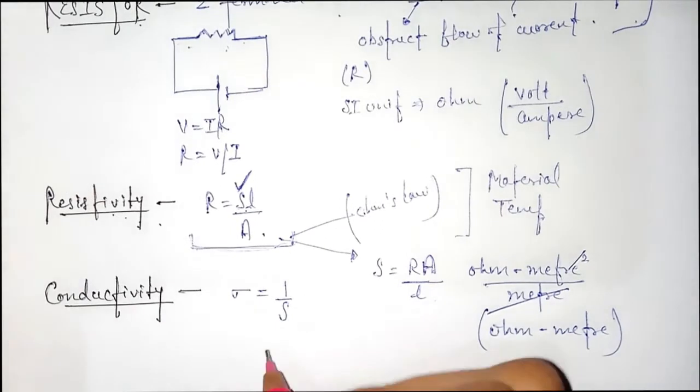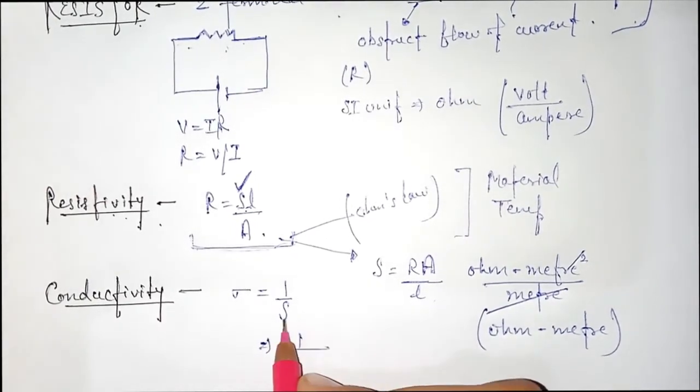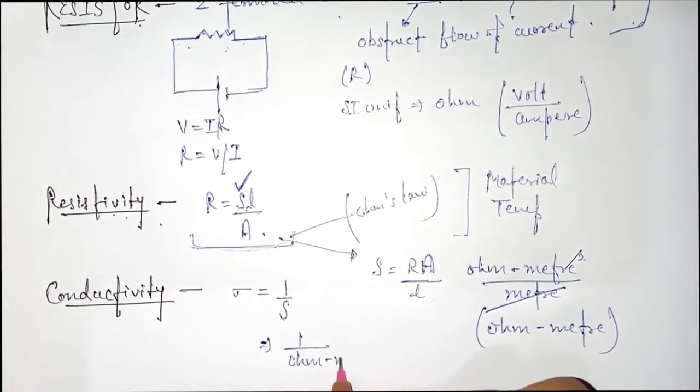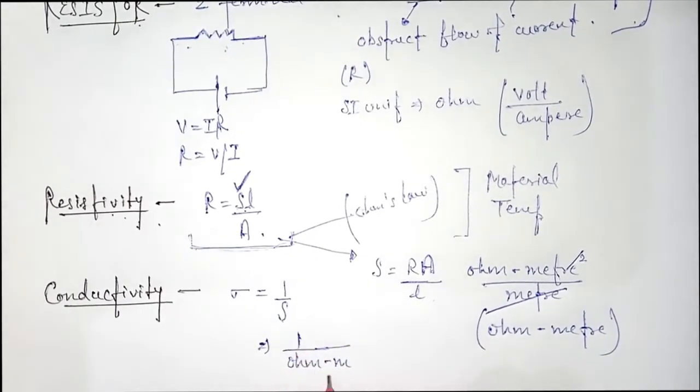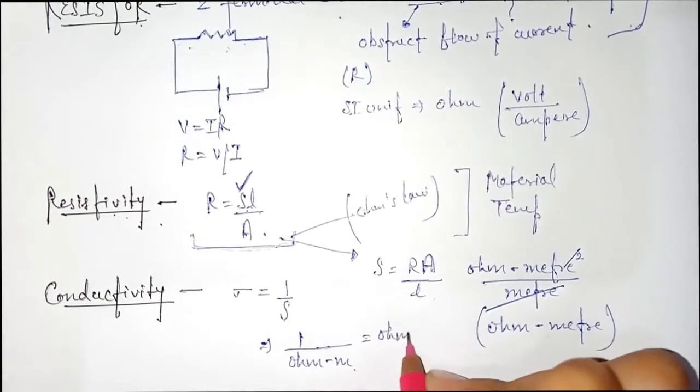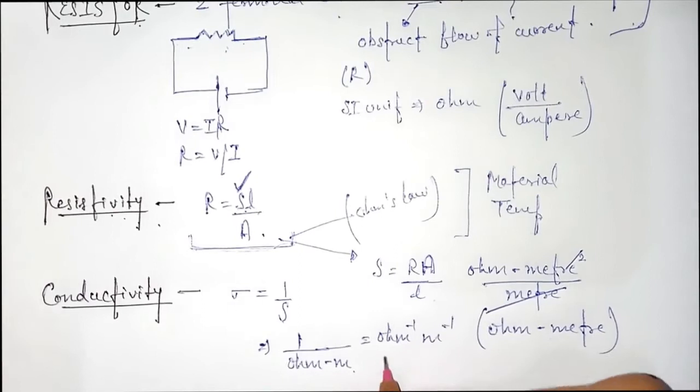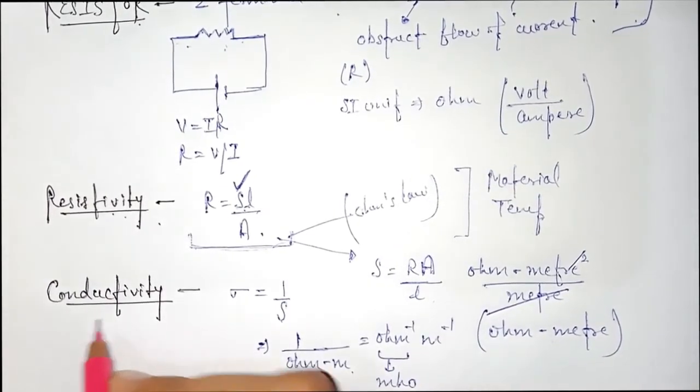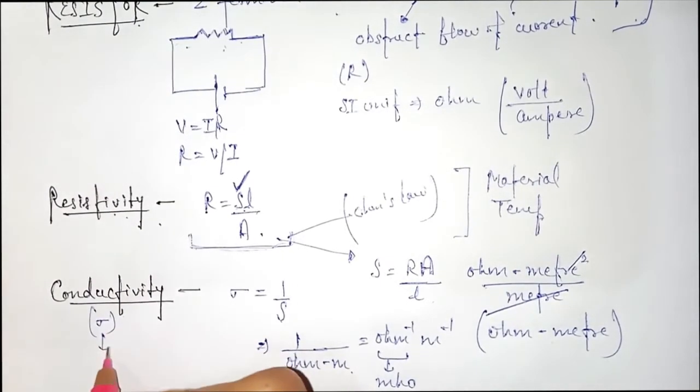For conductivity, if resistivity unit is ohm meter, then for conductivity, SI unit is 1 by ohm meter. Here you can say ohm inverse, meter inverse.